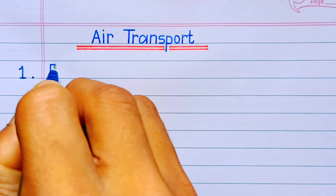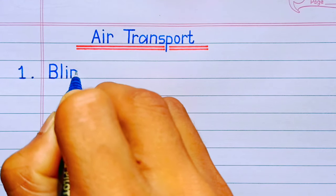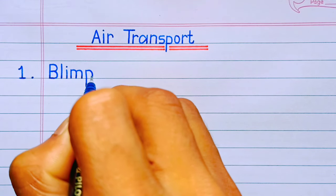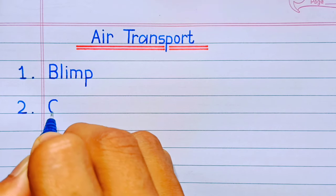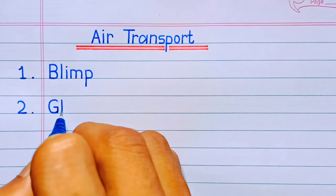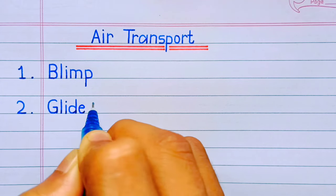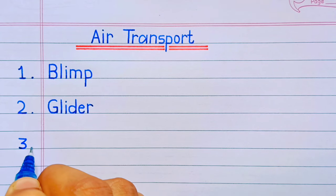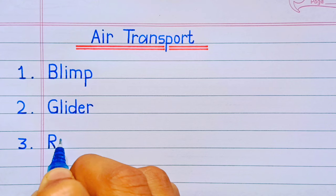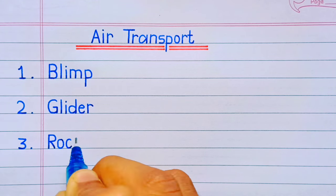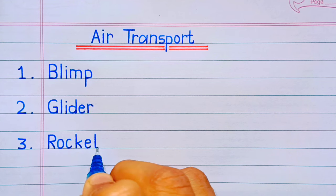So first, number one: blimp. Number two: glider. Number three: rocket.